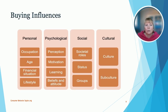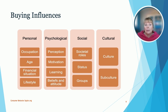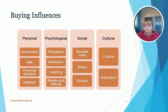Buying influences come from different directions. They may be personal — having to do with your occupation, your age, your financial situation, or your lifestyle. They also include psychological influences, such as perceived needs, your perception, motivation — what motivates you to buy something — learning about a new product, or your beliefs and attitudes. Then we have social influences: your societal roles. Maybe you're a parent, maybe you're a CEO of a company — you have different roles in different aspects of your life. You may also have social status and groups that you belong to.